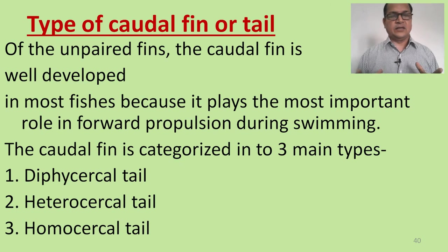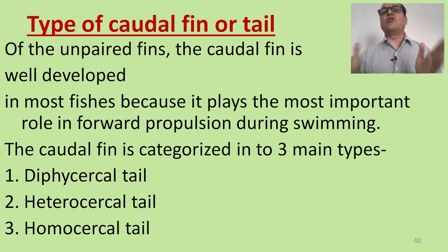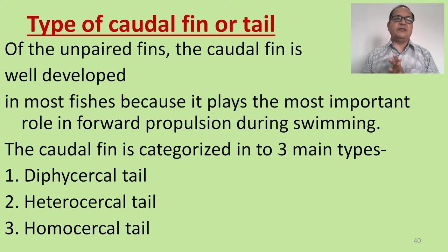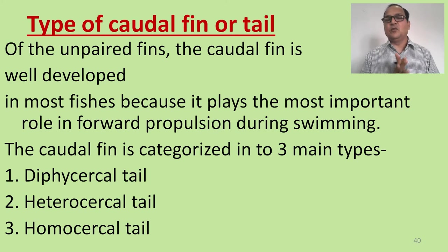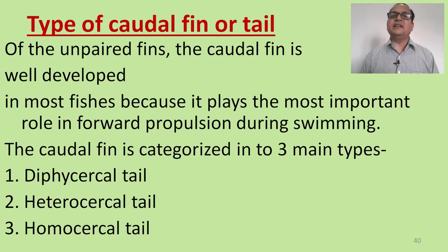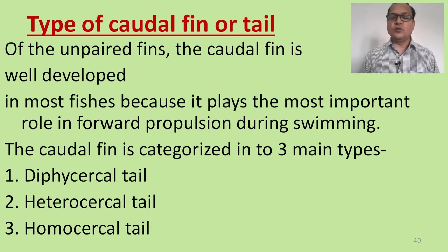Now the next topic: the types of caudal fin or tail. Of the unpaired fins, the caudal fin is well developed in most fishes because it plays the most important role in forward propulsion during swimming. The caudal fin is characterized into three types: diphycercal, heterocercal, and homocercal tail.